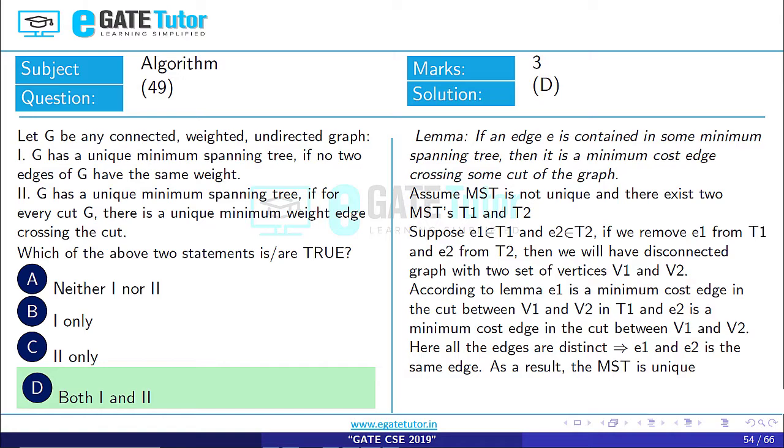So if E2 is the smallest, then E1 is not the minimum cost edge cut. Both have the same edge. As a result, the MST is unique. There is no other MST present.